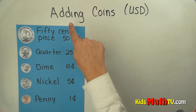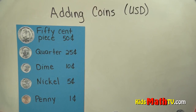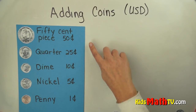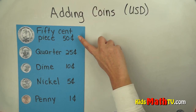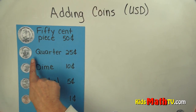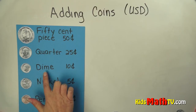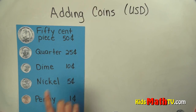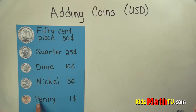In this lesson we will be adding coins, and these are US coins. These are the coins that we'll be using. The 50 cent piece is worth 50 cents. The quarter is worth 25 cents. A dime is worth 10 cents. A nickel is worth 5 cents and a penny is worth 1 cent.